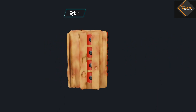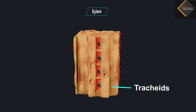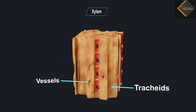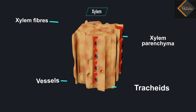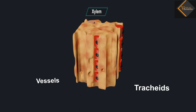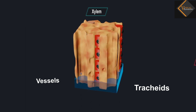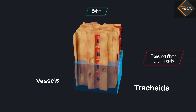Xylem consists of tracheids, vessels, xylem parenchyma, and xylem fibers. Tracheids and vessels have thick walls and many are dead cells when mature. Tracheids and vessels are tubular structures. This allows them to transport water and minerals vertically.